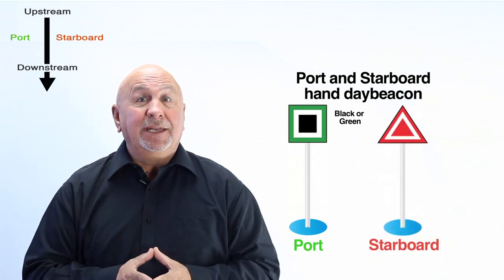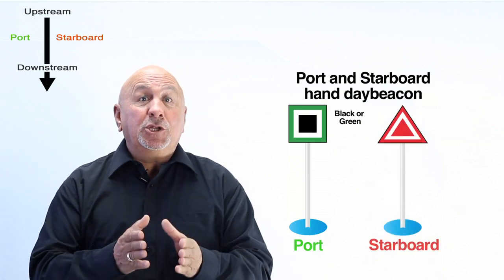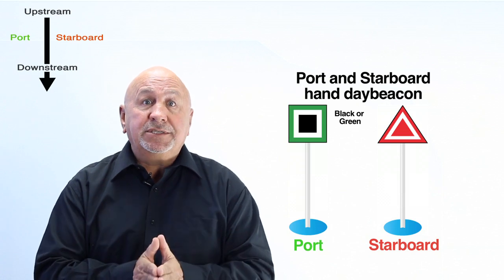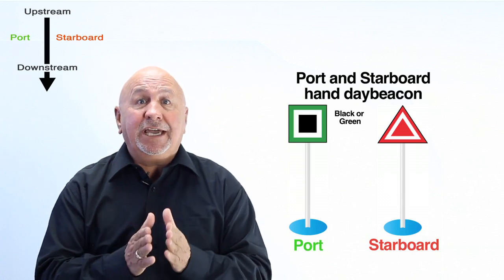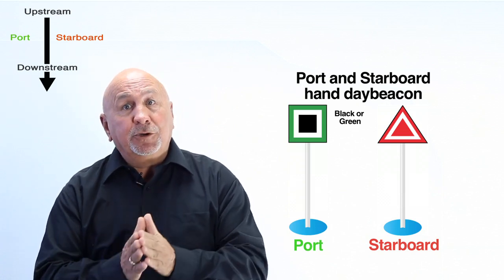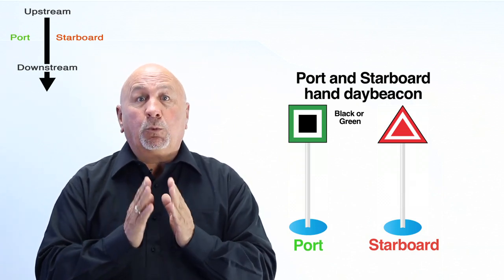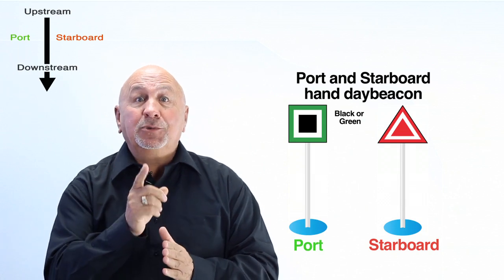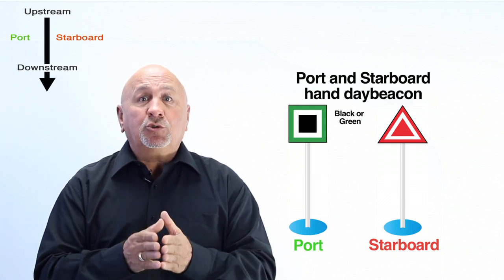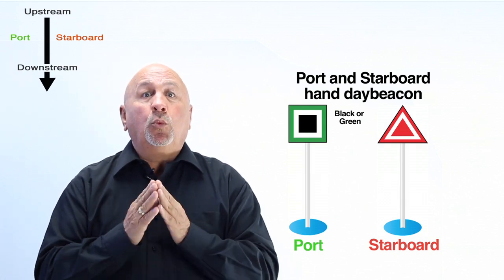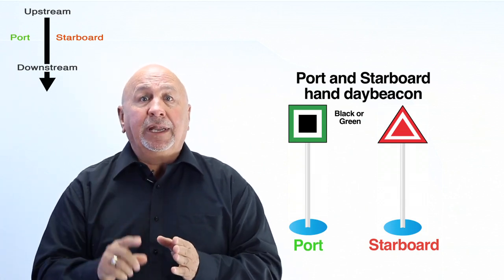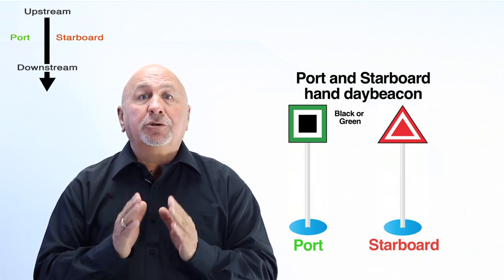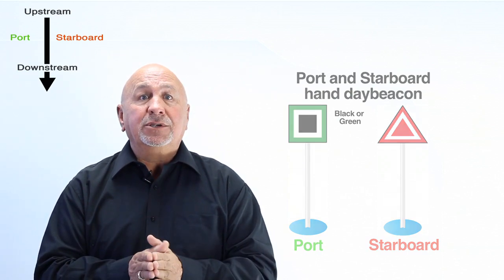Starboard hand day beacon is similar to a starboard hand lateral buoy. It points out the right side of the preferred channel and must be on the right when the craft is going upstream. It is a red triangle with a white contoured line, has no lights, and is only visible during daylight hours.